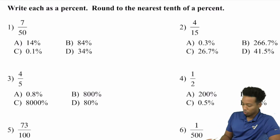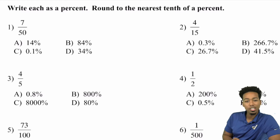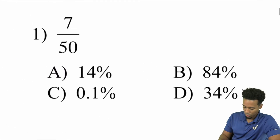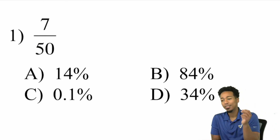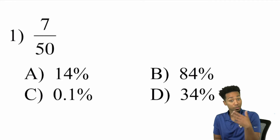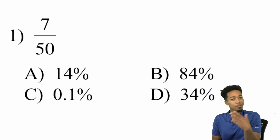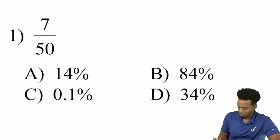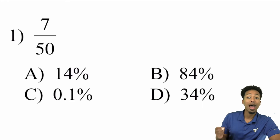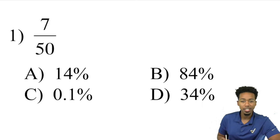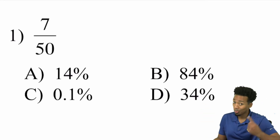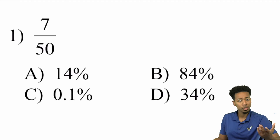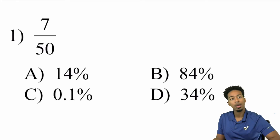So we have this first problem: write them as a percent and round to the nearest tenth of a percent if necessary. We have 7 over 50. There are two real ways to do this. All percents are out of 100, so: method one is to write the fraction out of 100, and method two is to turn it into a decimal first and then multiply by 100 to get a percent.